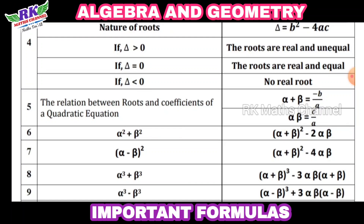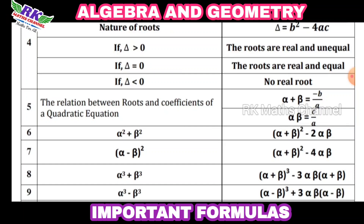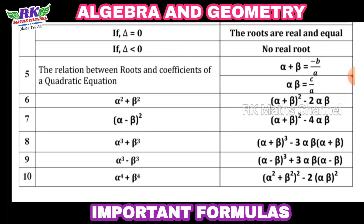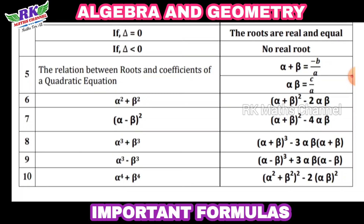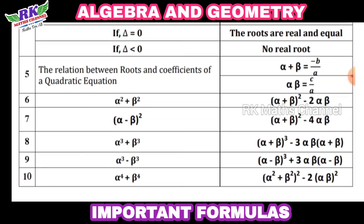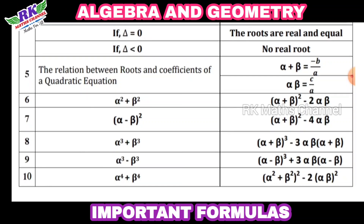Next, the relation between the roots and coefficients of a quadratic equation: alpha plus beta equals −b/a, and alpha times beta equals c/a.